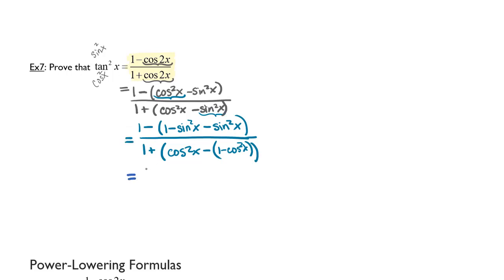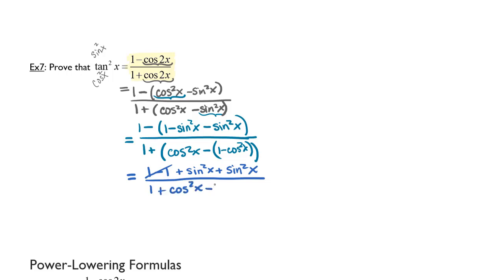At this point I can simplify this to 1 minus 1 plus sine squared x plus sine squared x, distributing that negative through. In the denominator I have 1 plus cosine squared x minus 1 plus cosine squared x, again distributing that negative through to both terms inside. And my 1 minus 1 adds to 0 in the denominator as well. This gives me 2 sine squared x over 2 cosine squared x.